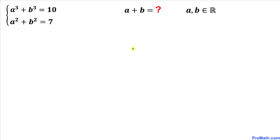Welcome to pre-math. In this video we have got this system of equations: a cubed plus b cubed equals 10, a squared plus b squared equals 7, and now we are going to find the value of a plus b. Make sure that a and b are real numbers.